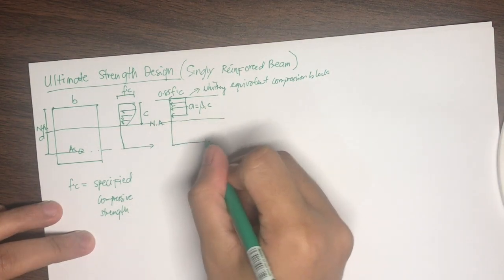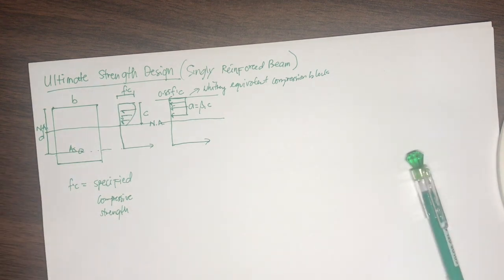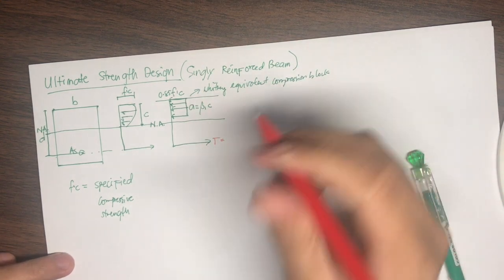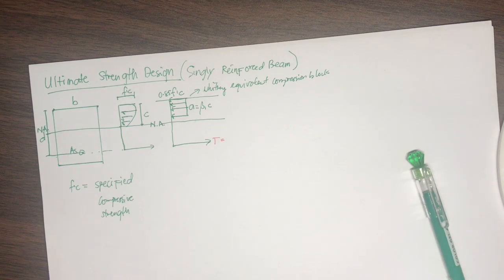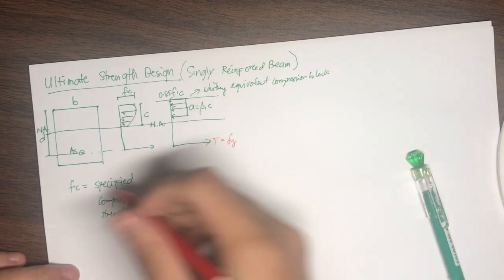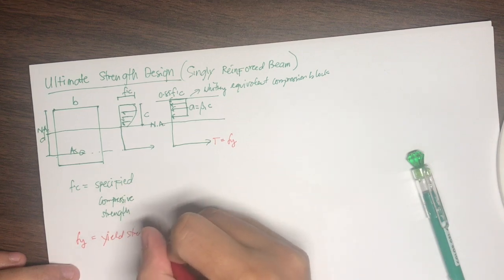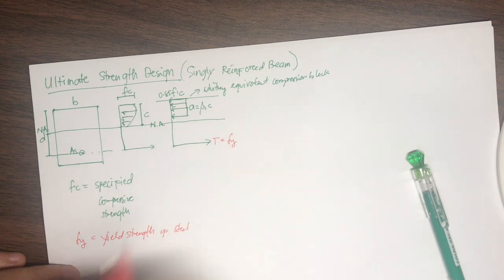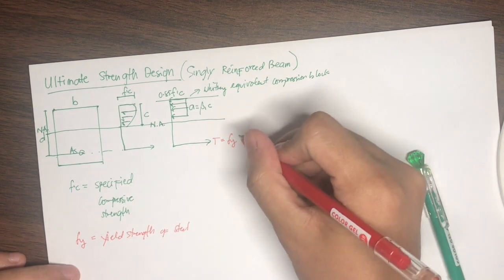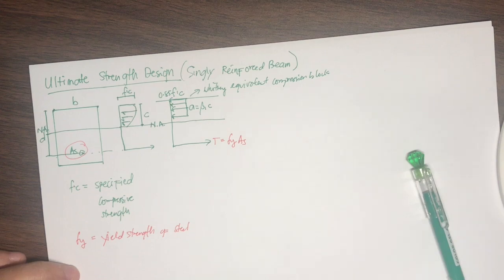We have the tensile reinforcement producing a tensile force T. From mechanics of deformable bodies, stress equals force over area, so force equals stress times area. The stress is Fy — the yield strength of steel — multiplied by the area of reinforcement, represented as A sub S.